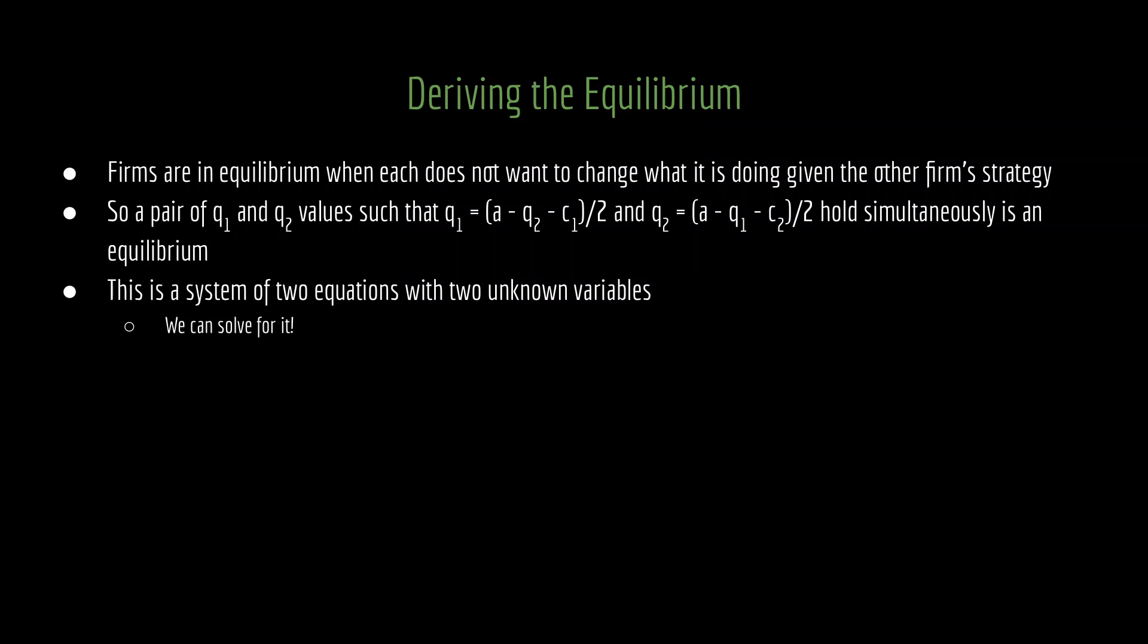One puzzle might be that you think we have more than two unknown variables. If you look at the variables we have, there's A, Q1, Q2, C1, and C2 - five different variables. But in fact, only two are actually being chosen. A is given to us, C1 is given to us, C2 is given to us. A is just some value in the world that is the price function. C1 is your marginal cost, C2 is the other firm's marginal cost. Those things are fixed. The only things that can change are Q1 and Q2. Those are the only endogenous components to this model. Because we only have two variables that are unknown, we can solve for this.